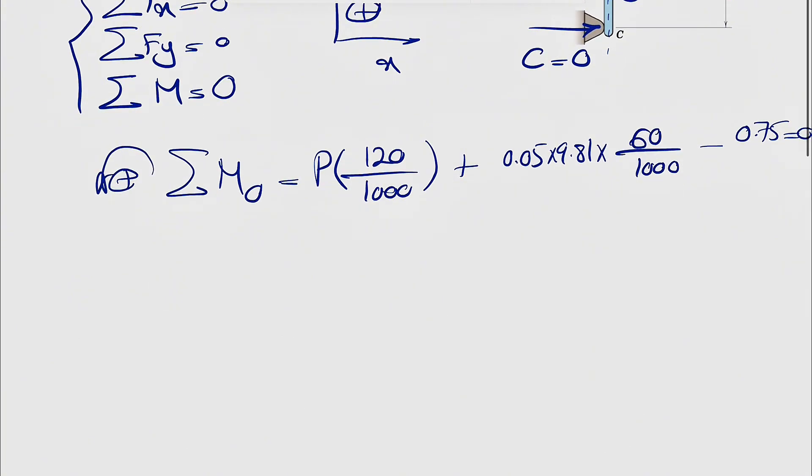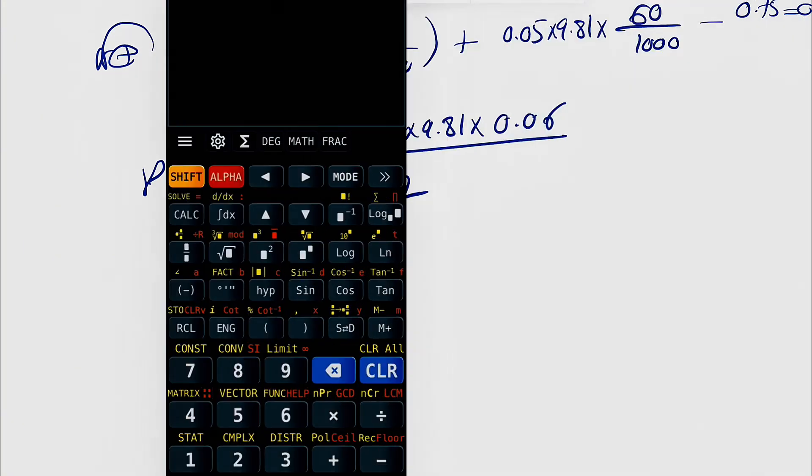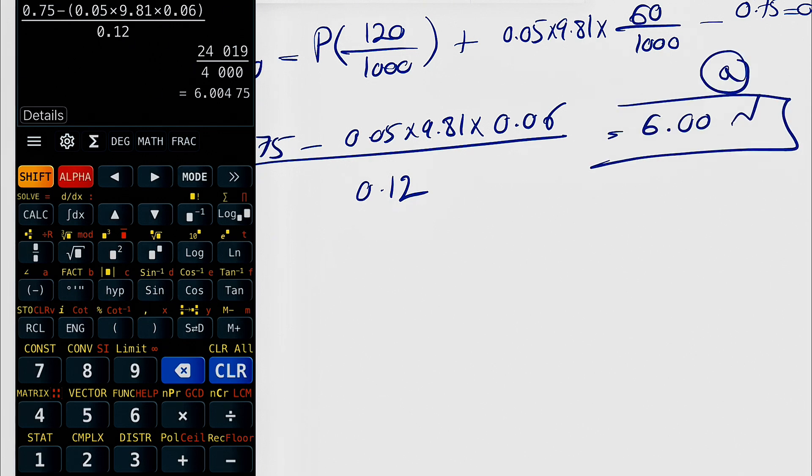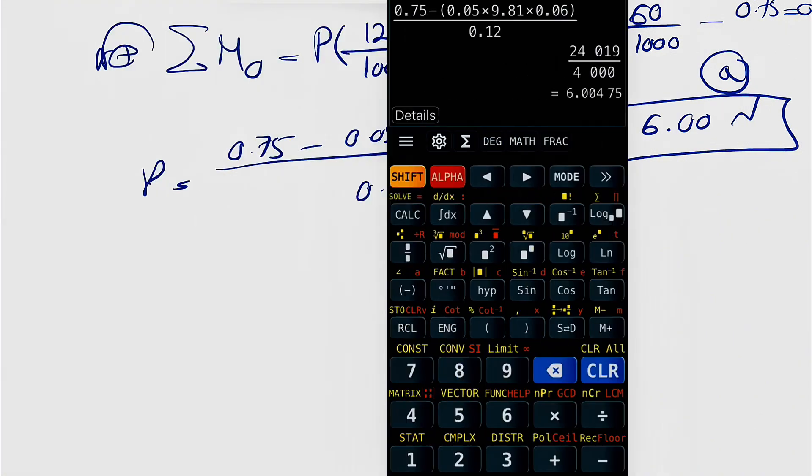And this is going to give us the force P: 0.75 minus 0.05 times 9.81 times 0.06 divided by 0.12. Let's see what we get. 0.75 minus 0.05 times 9.81 times 0.06, and we're going to divide that by 0.12. This is going to give us 6.00 Newtons, and the answer for the A part.